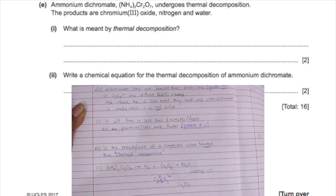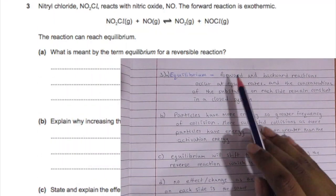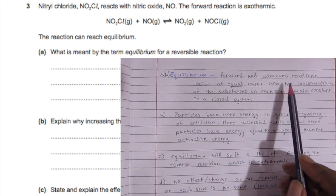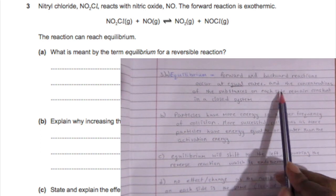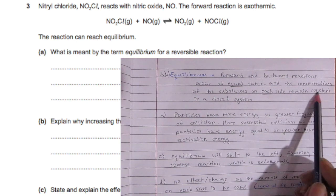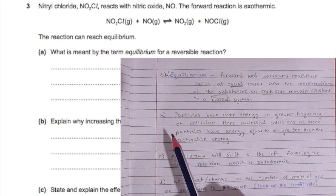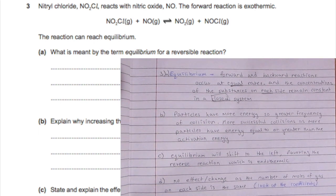Equilibrium is where a forward and backward reaction occur at equal rates, and the concentration of the substances on each side remain constant in a closed system. If gas is released, it would not be the same anymore.